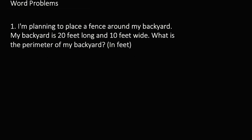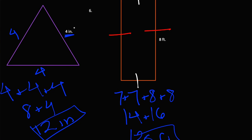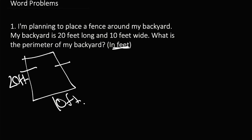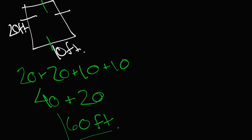Now let's move on to some word problems. I'm planning to place a fence around my backyard. My backyard is 20 feet long and 10 feet wide — what is the perimeter? So we draw this out: we have our backyard, it's 20 feet long and 10 feet wide, like a rectangle. Since opposite sides are the same, we can do 20 plus 20 plus 10 plus 10. 20 plus 20 is 40, and 10 plus 10 is 20, and 40 plus 20 is 60. So the perimeter of the backyard is 60 feet.